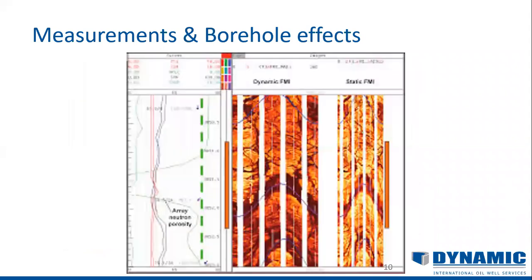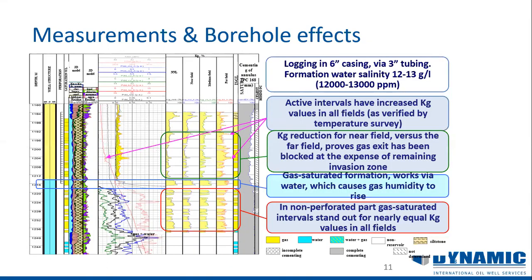Another example is the resistivity image log, which shows the dip meter and formation structure — identifying faults, formation dip, and predicting which direction oil will migrate for planning the next well location. There is also an example from a cased hole log — a reservoir and integrity tool that allocates hydrocarbon through casing and helps understand lithology saturation, casing integrity, and cement status. This tool combines lithology saturation, cementing, and casing integrity measurements.